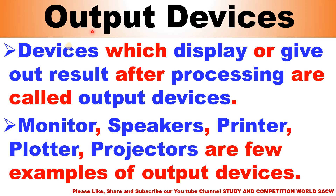Next is output devices. Devices which display or give out a result after processing are called output devices. You can write in your copy what is input, what is output, what are computer devices, and what are input and output devices. Examples of output devices are: monitor, speakers, printer, plotter, and projector. I will discuss these examples in detail in the next chapter.